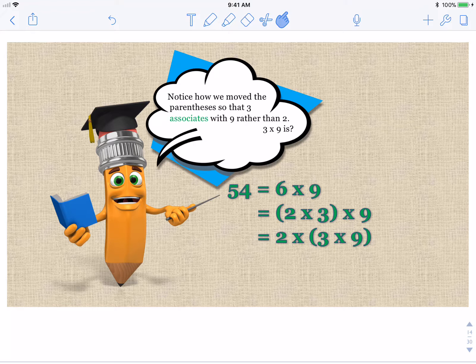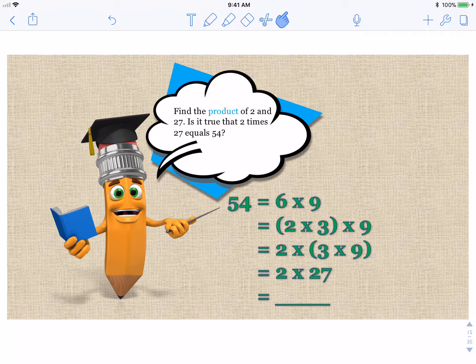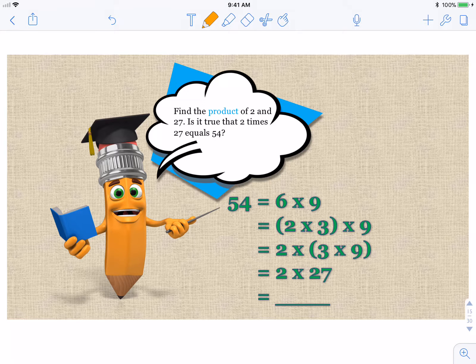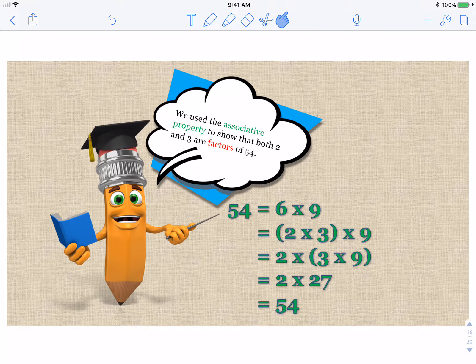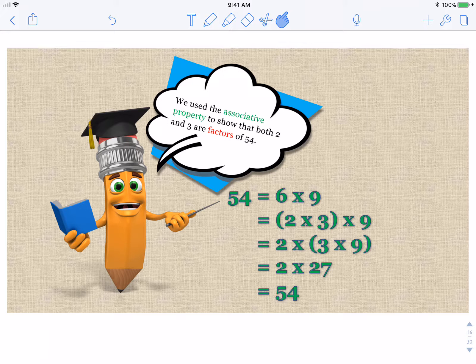Let's write it vertically so that it's very easy to see how the factor 6 is related to 2 times 3. So we have our 6 and 2 times 3 times 9. Notice how we move the parentheses so that 3 associates with 9 rather than 2. 3 times 9 is 27. Find the product of 2 and 27. Is it true that 2 times 27 equals 54? Go ahead, use standard algorithm and solve it. 2 times 27. We use the associative property to show that both 2 and 3 are factors of 54.